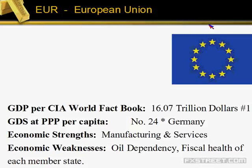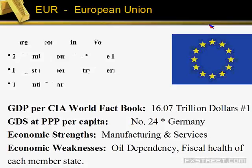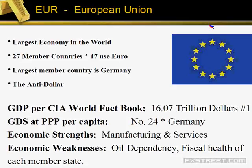The European Union is the largest economy. There are 27 member states, but only 17 use the Euro. They have $16 trillion in their GDP. One of their strengths is manufacturing and services — it's primarily a service economy right now. Oil dependency is a big deal and is the primary difference between the Eurozone and the UK or the Great British pound. The physical health of each member state is an issue — it's taken a beating because of the debt issues in several states. The largest member, Germany, represents about 25% of the GDP and is really driving things by supporting and paying off a lot of this debt.